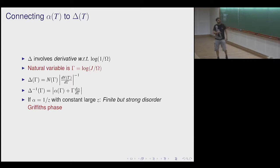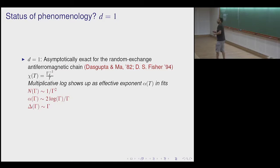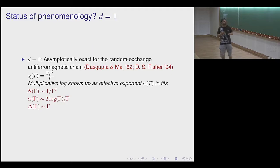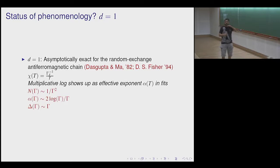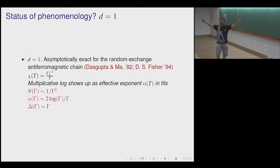In one dimension it's well known that this is actually an asymptotically exact picture for random exchange antiferromagnetic chains. This was realized by Dasgupta and Ma, and later solved analytically by Daniel Fisher. The susceptibility is a log-corrected Curie tail, and the number of pairs surviving at scale γ is 1/γ², with the width of the distributions growing without bound. This is a simple analytically tractable case.